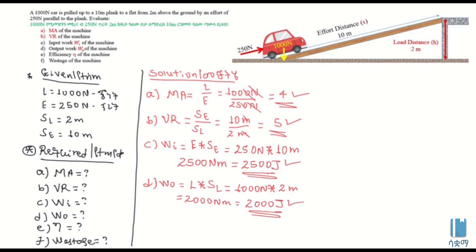E is one of the advantages — the efficiency — which is calculated from output work over input work. Output work is the input work of the implementers. The factor will be the output work divided by the input work level.